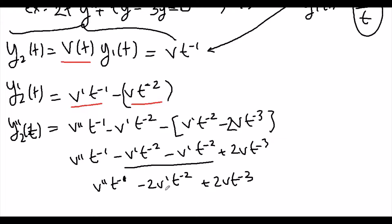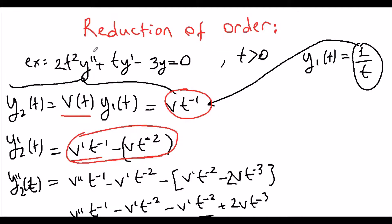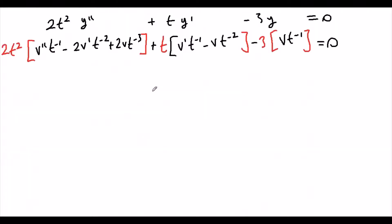Now we have the second derivative, first derivative, and the function y2. We plug them into our original problem t²y'' + ty' - 2y = 0, placing each derivative in the corresponding term, and distribute carefully.